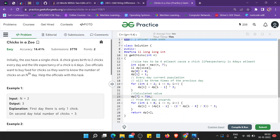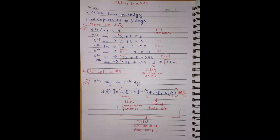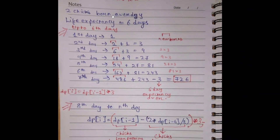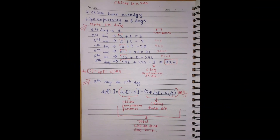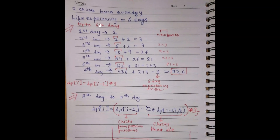This is a very simple question. If two chicks are born every day and life expectancy is six days, on the first day only one chick is present. On the second day, that chick (the parent) gives birth to two more chicks — the mark here is for newborns — plus the parent itself, so total is three.